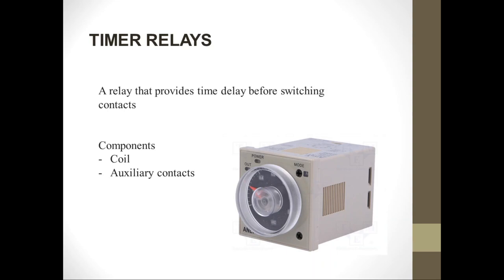Before it switches its auxiliary contacts, the timer provides a time delay, as the name suggests. Depending on the type, the delay process may vary. There are two types of timer relays: the on-delay type and the off-delay type. For the on-delay type, when the coil is energized, the timer provides a time delay, and after the preset time, the auxiliary contacts switch position.